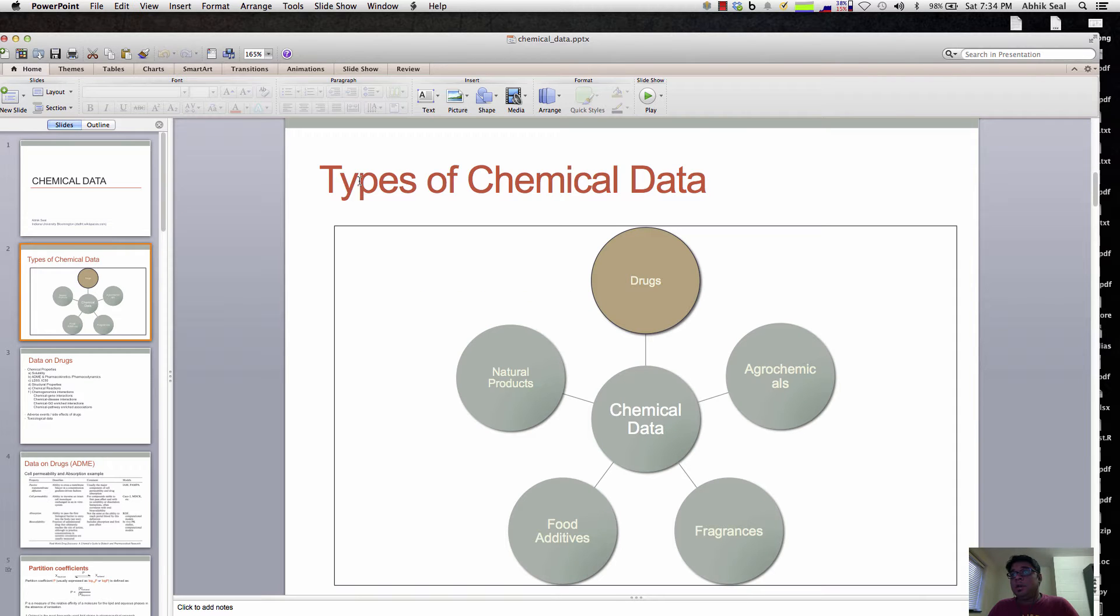Here you can see types of chemical data is from the drugs, the approved drugs, the agrochemical industry has lots of chemical data, the natural products also has lots of chemical data.